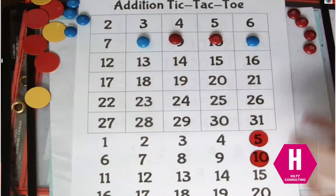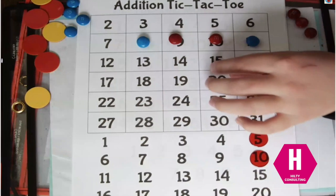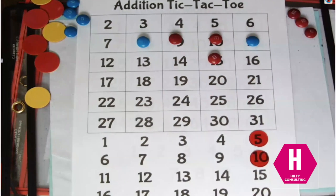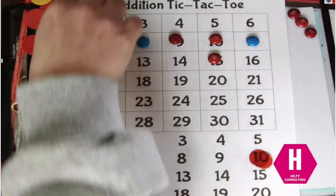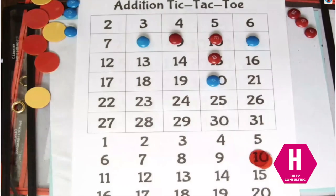Ten plus five equals fifteen. So he did ten plus five equals fifteen. I am going to do ten plus ten equals twenty and block him there.